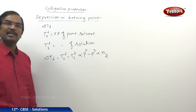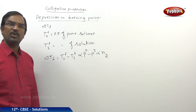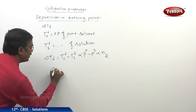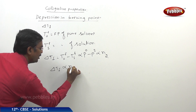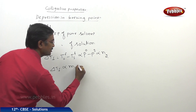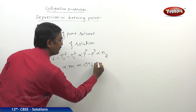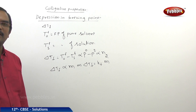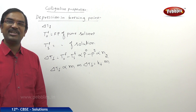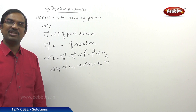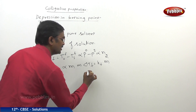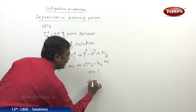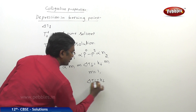Experimentally it is observed that delta Tf is also proportional to the molality of the solution. Therefore delta Tf can be written as proportional to molality, and from this delta Tf equals Kf times molality, where Kf is called the molal depression constant.